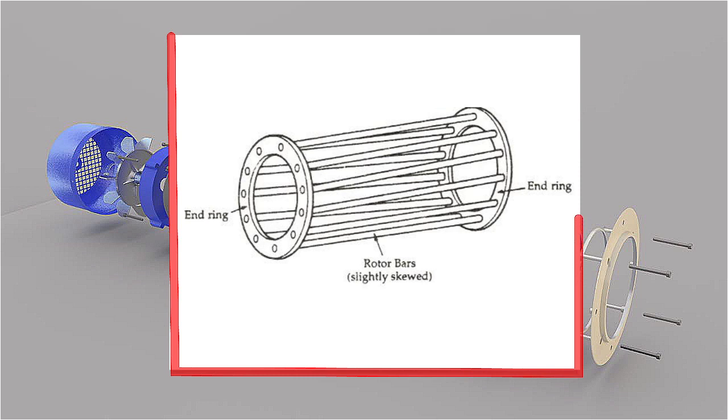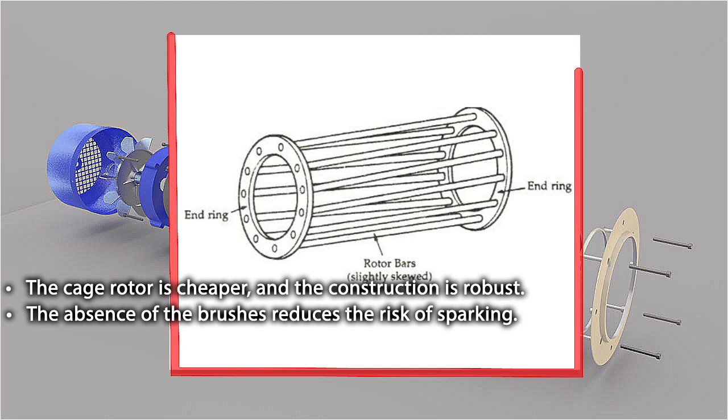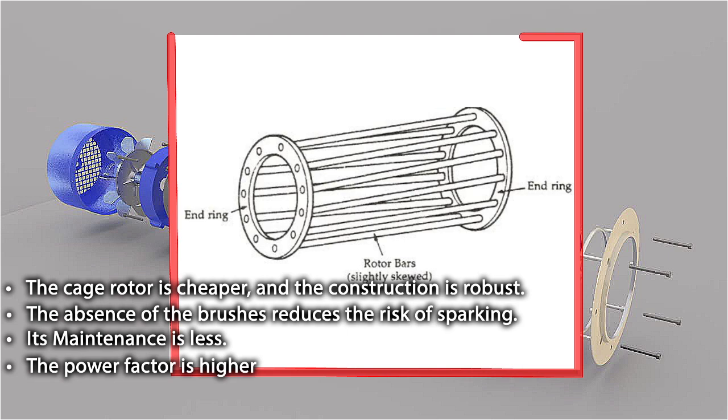Advantages of a squirrel cage rotor. The following advantages of the cage rotor are given below. The cage rotor is cheaper and the construction is robust. The absence of the brushes reduces the risk of sparking. Its maintenance is less, the power factor is higher, and the efficiency of the cage rotor is higher.